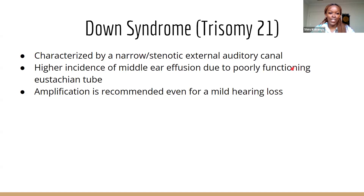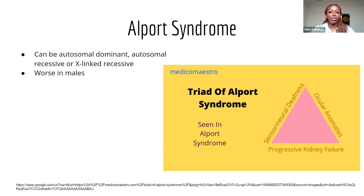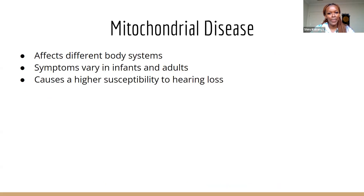Alport Syndrome is an autosomal dominant, autosomal recessive, or X-linked recessive genetic condition that affects the production of type 4 collagen. It is known to be worse in males and results in a progressive sensorineural hearing loss and kidney impairment. Mitochondrial disease affects different body systems, not just hearing. Symptoms include progressive deterioration in brain function and seizures in infants, and in adults presents with diabetes and sensorineural hearing loss. The disease increases susceptibility to aminoglycoside ototoxicity, resulting in higher susceptibility to hearing loss.